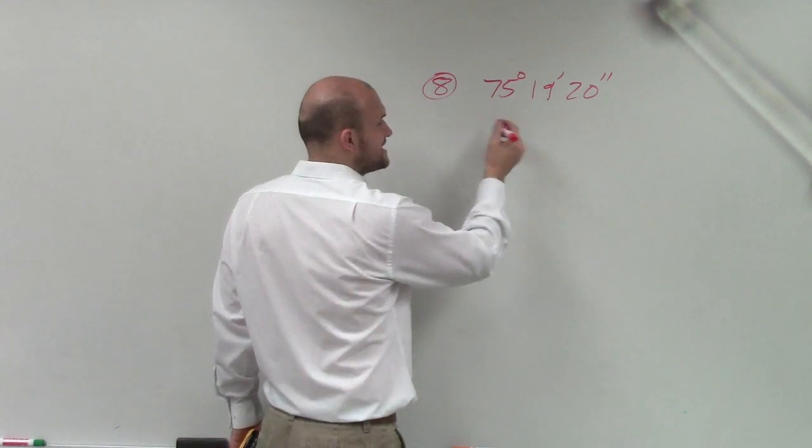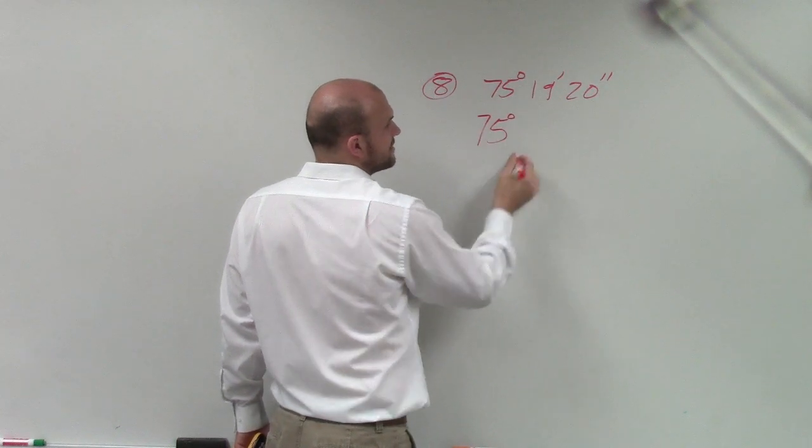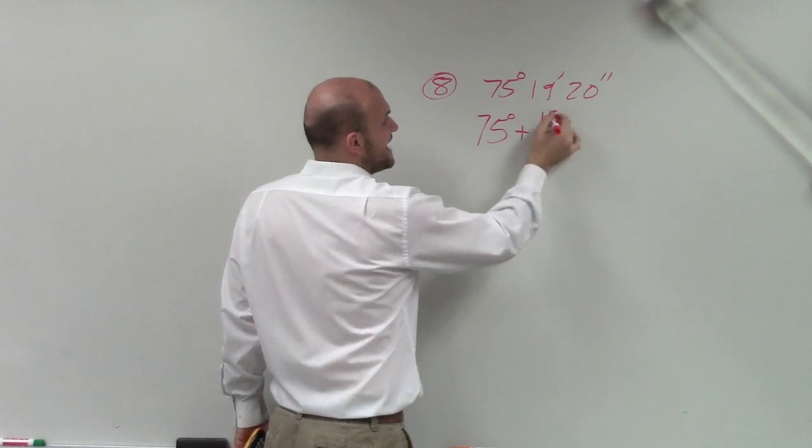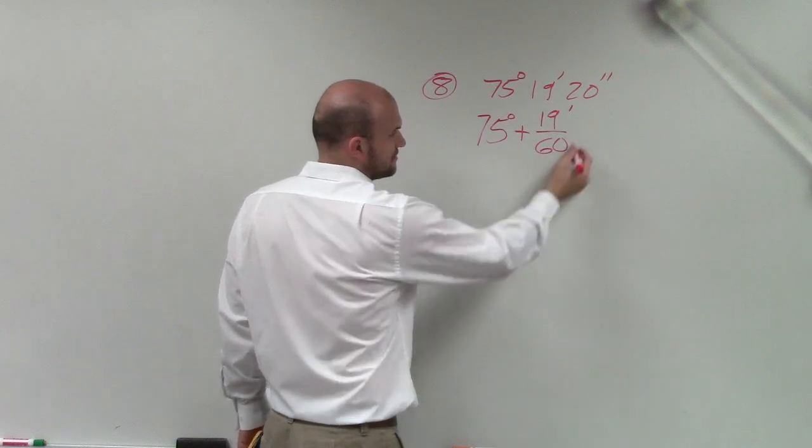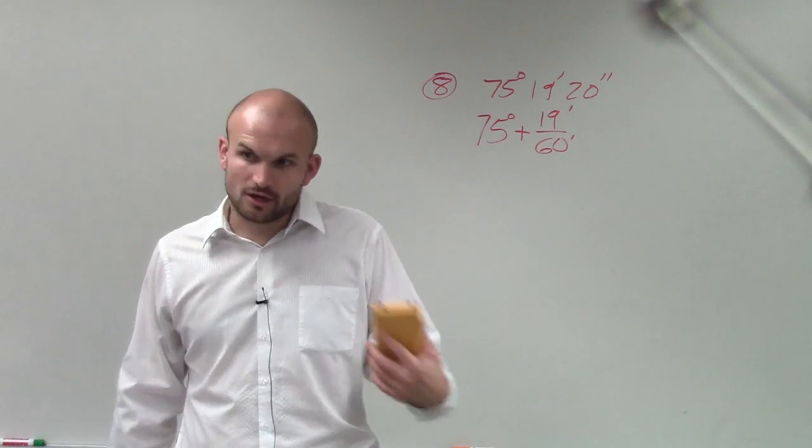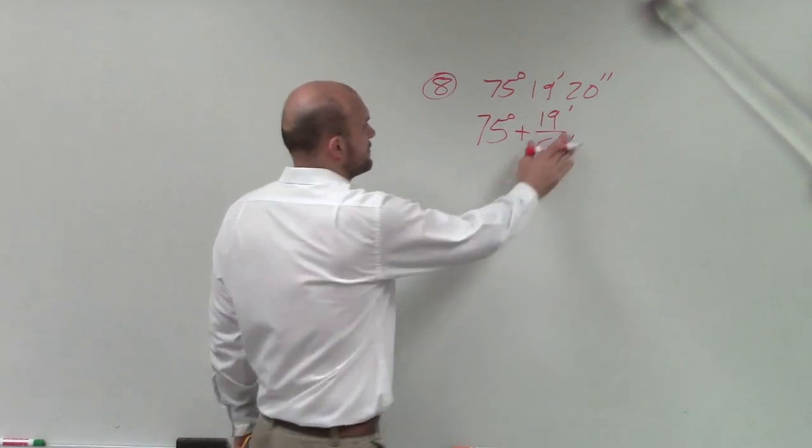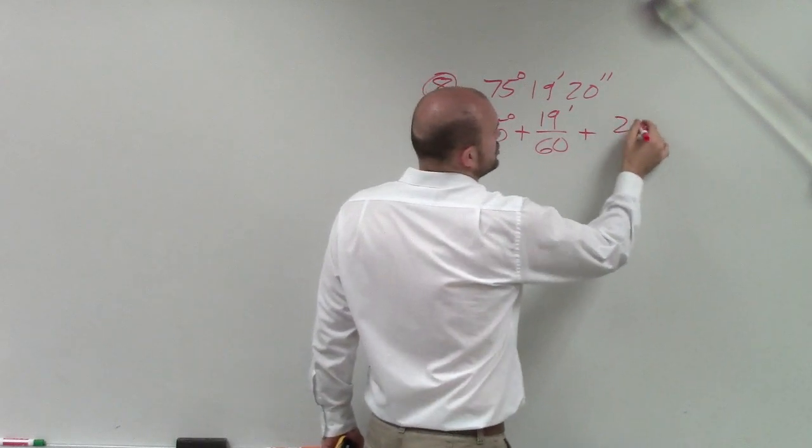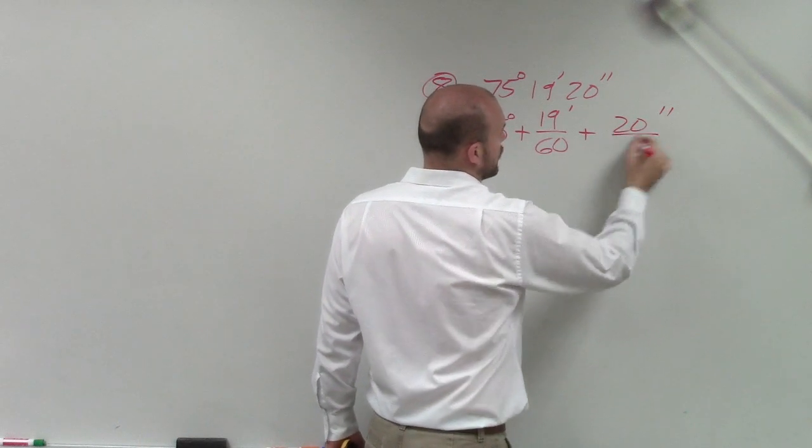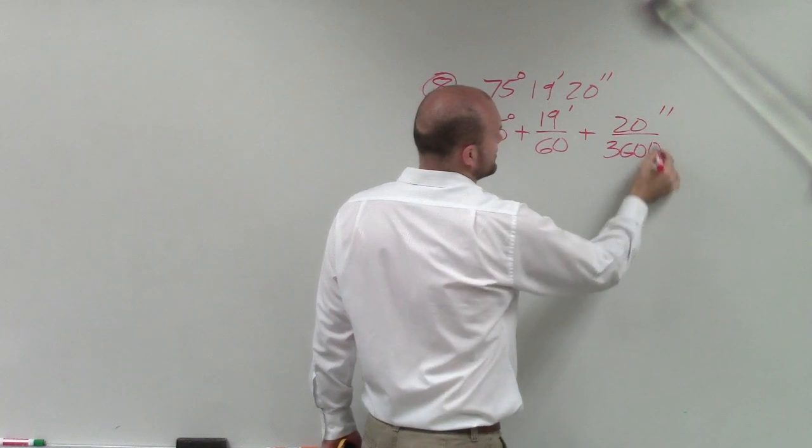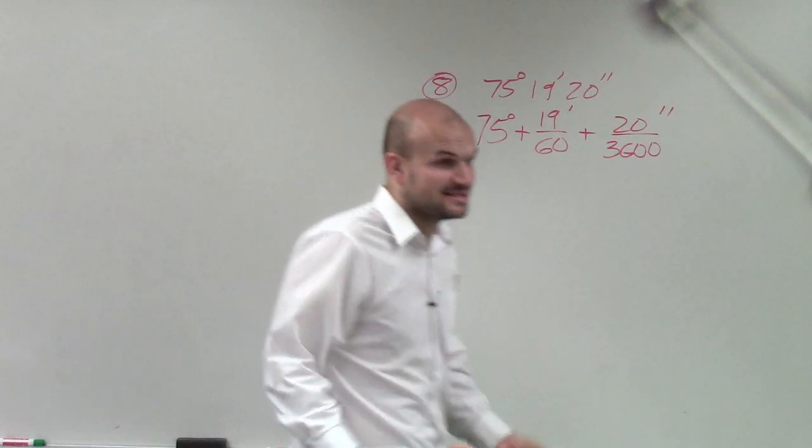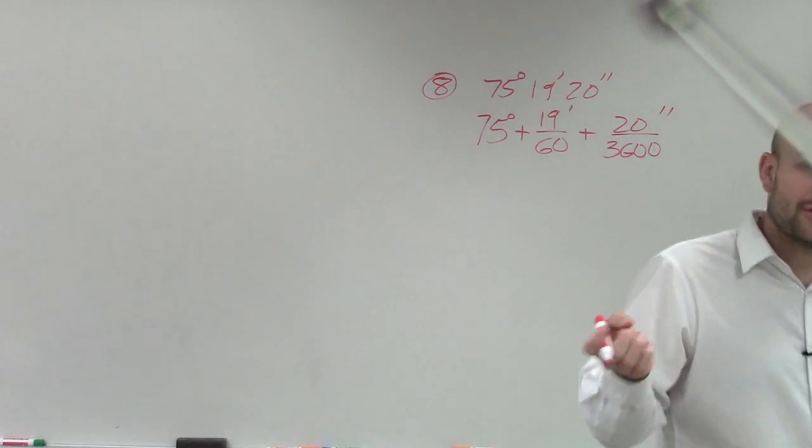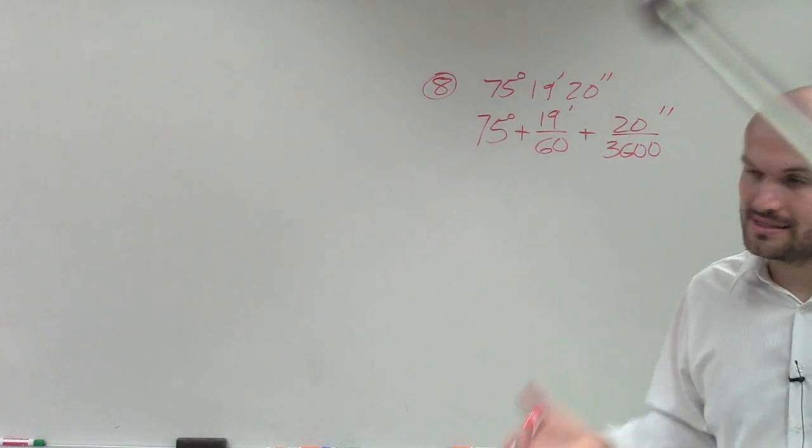So remember, when we're talking about decimal form, we have degrees plus 19 minutes over 60 minutes, plus 20 seconds over 3,600 seconds. Because it takes 60 minutes to make one degree, and it takes 3,600 seconds to make one degree.